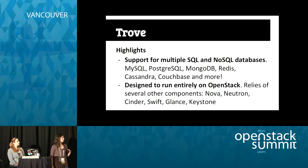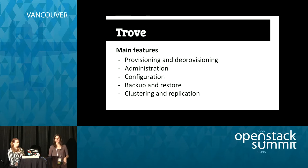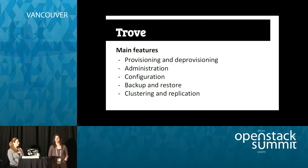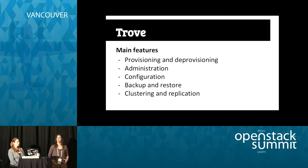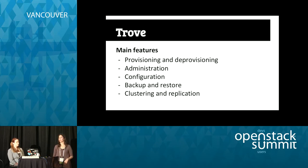Right now, Trove is relying on Nova, Neutron, Cinder, Swift, Glance, and Keystone to perform its tasks. As mentioned earlier, main features for Trove are provisioning and deprovisioning data store instances, but it also has functionality for administration, configuration, backup and restore, and clustering and replication — which are maybe the most interesting features right now.